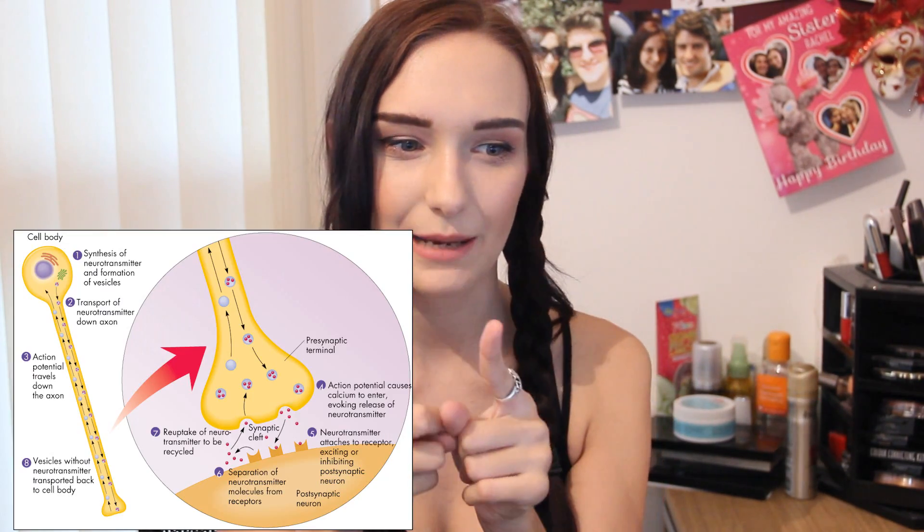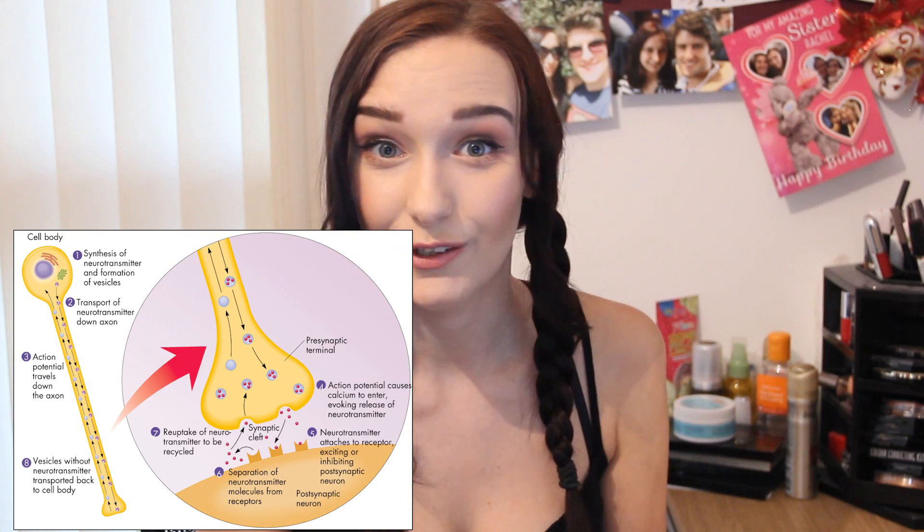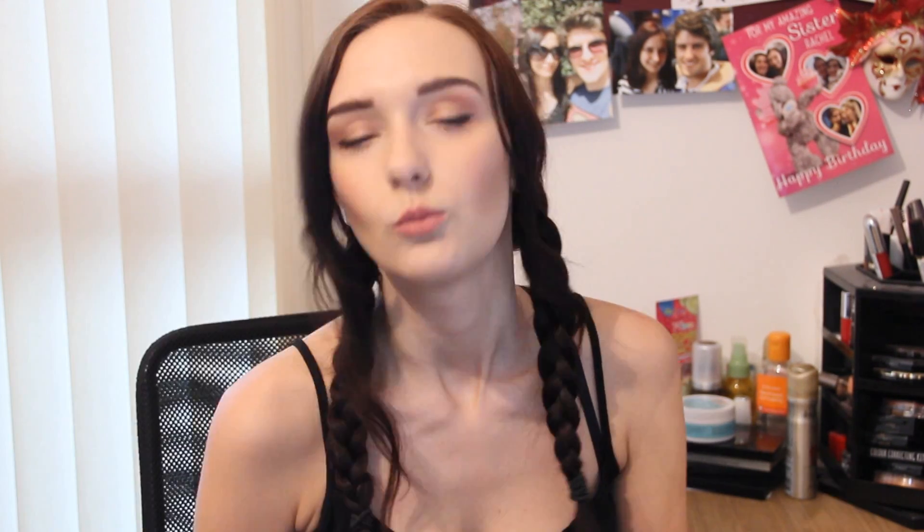The places where neurons meet are called synapses, and lots of interesting stuff happens there. All neurons are slightly different depending on their function — some have lots of dendrites, some have more axons, some have a really long axon, some have a really short axon — and there are loads of variations, but that's something to talk about in another video.